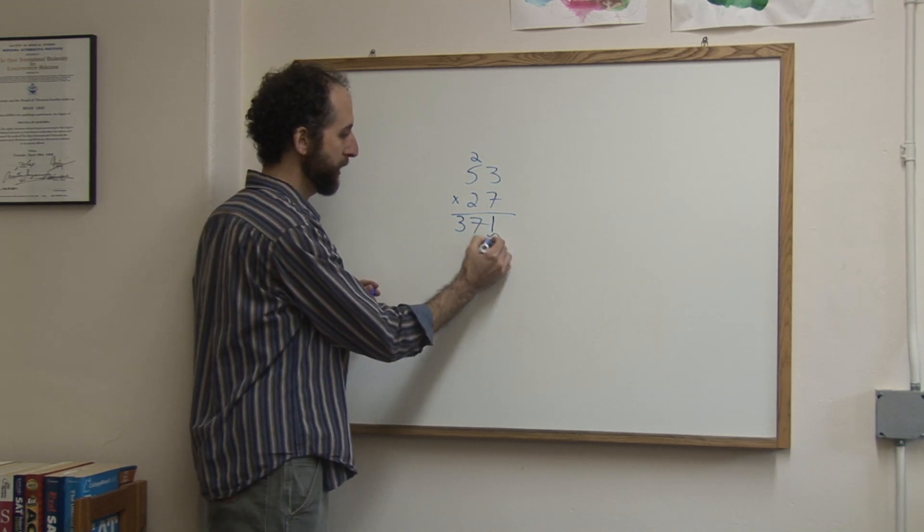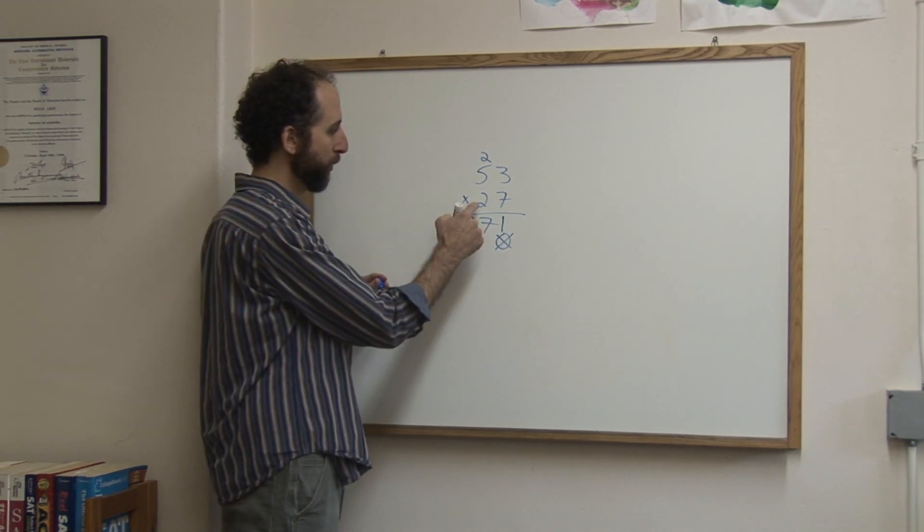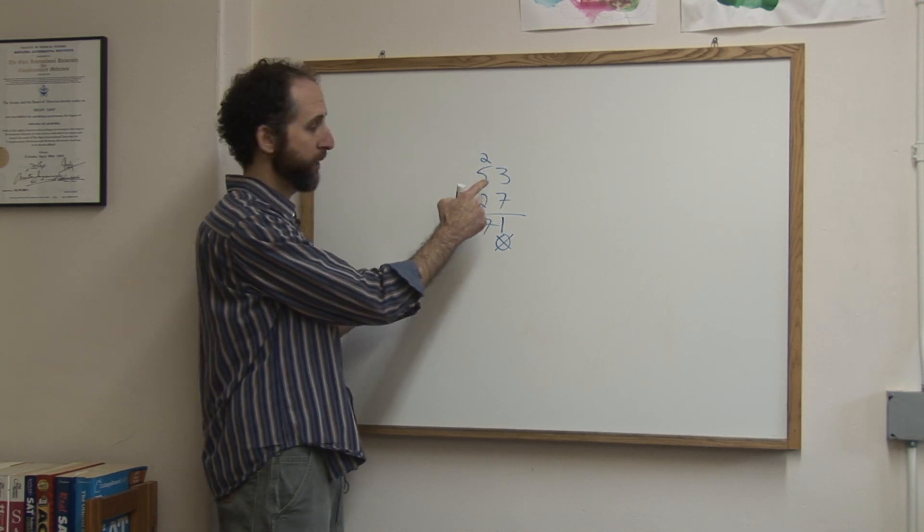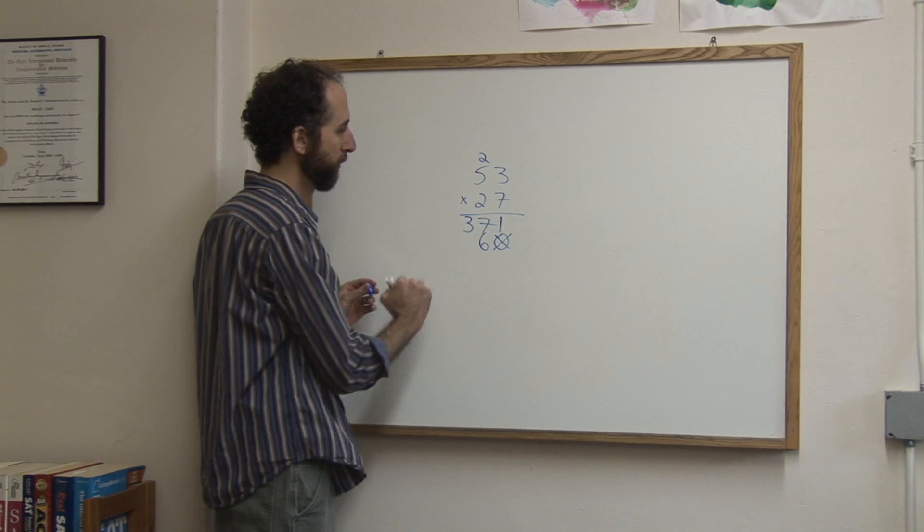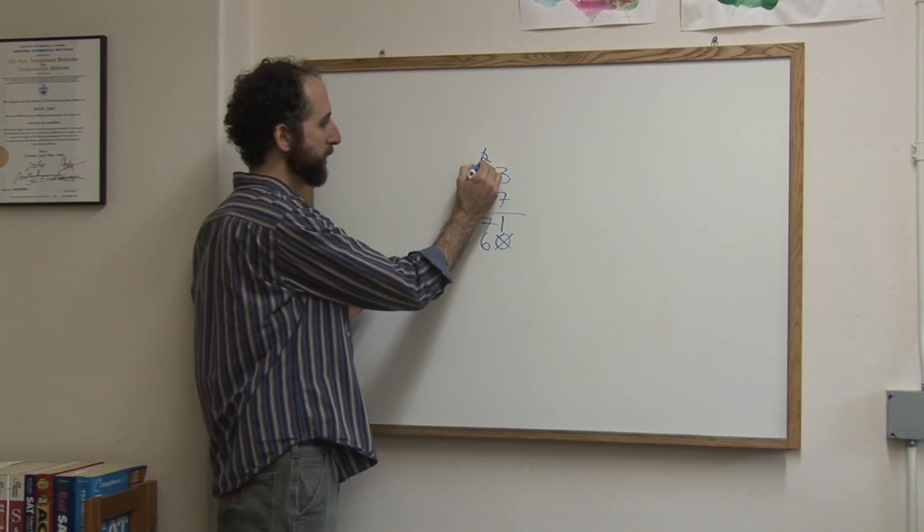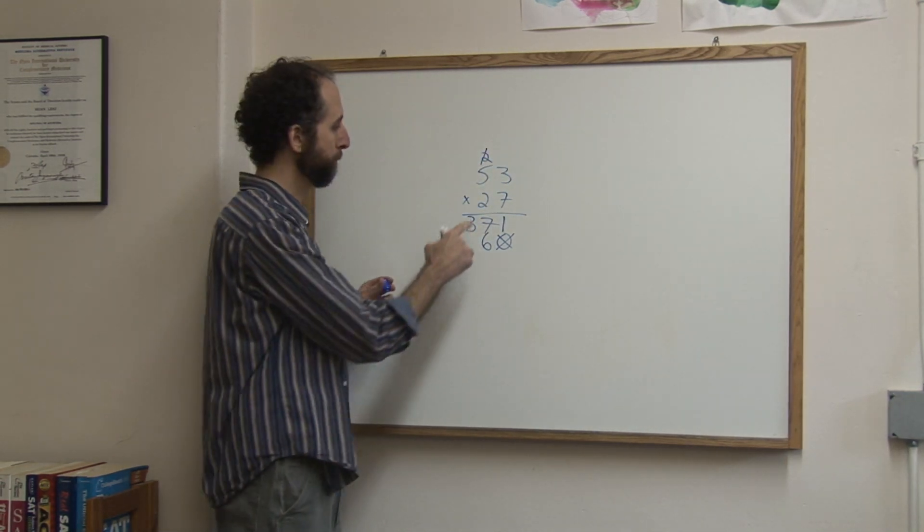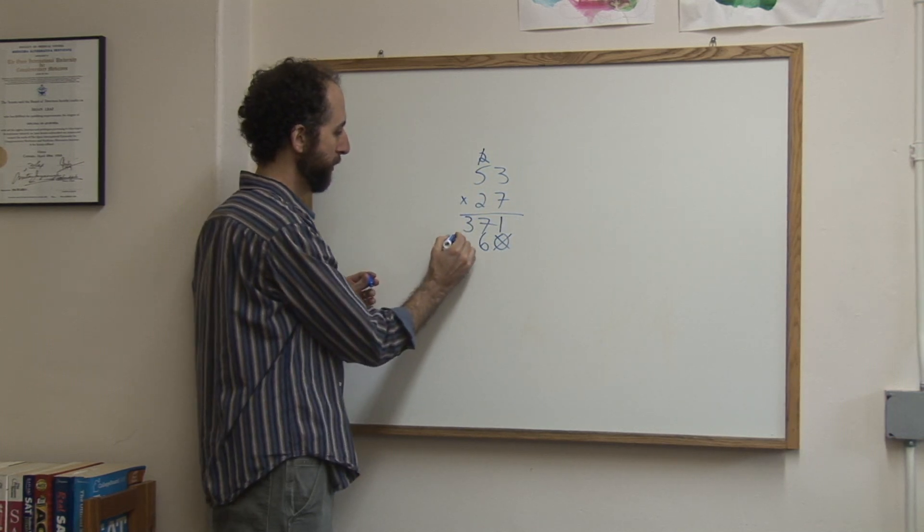Now you're not going to put anything here, that's the placeholder. We'll go to the second digit and you're going to multiply it by each of these as well. So 2 times 3 is 6, nothing to carry. I'm going to cross this out so I don't mistake it later. 2 times 5 is 10, so I write that here.